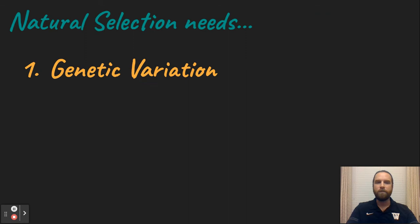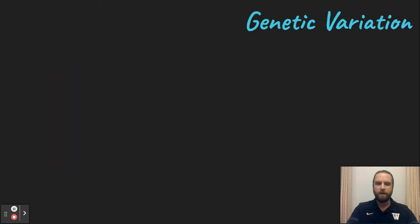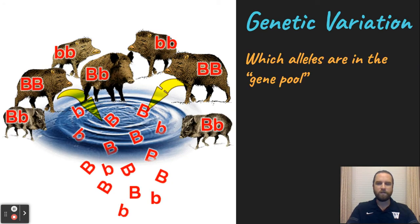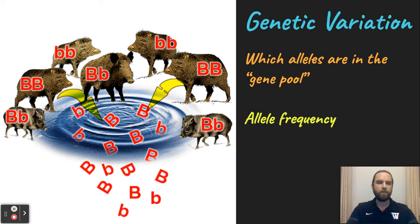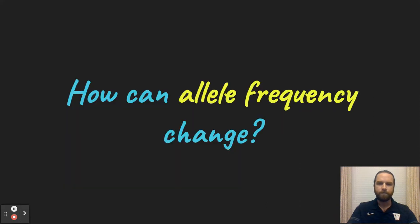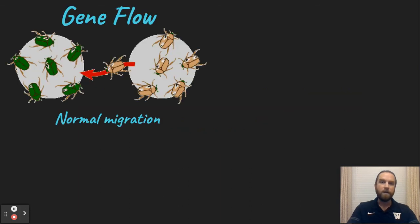Natural selection needs a few things in order to happen. It needs genetic variation — which alleles are present in the gene pool. We call this the allele frequency, the dominant and recessive alleles within a population. So how can we change the allele frequency, or how does it change over time to show that natural selection has occurred?